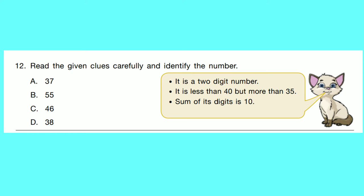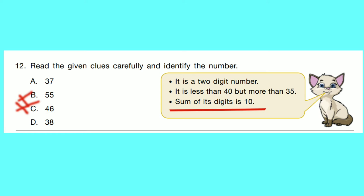Question number 12: Read the given clues carefully and identify the number. It is a two-digit number, less than 40 but more than 35, and the sum of its digits is 10. The number is between 35 and 40. Options A and D are correct, B and C are cancelled. Sum of digits of 37: 3 plus 7 equals 10. So correct option is A: 37.